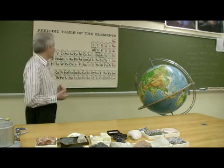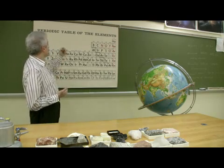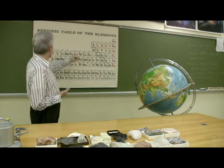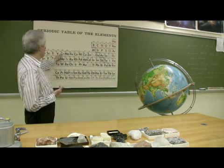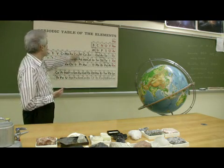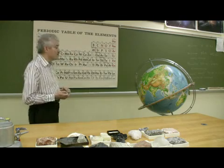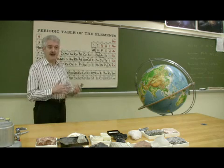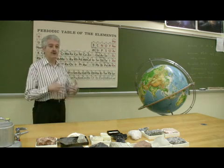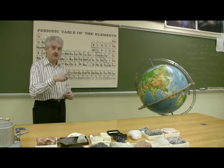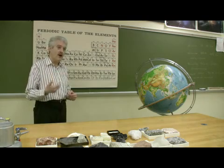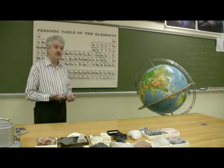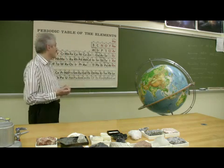A third type is called nichrome — the name comes from nickel (Ni) and chromium (Cr). It's about eighty percent nickel and about twenty percent chromium, and it's used to make heating elements. So if you have a hairdryer or a toaster and you look inside, you'll see coils of wire in there that heat up when electricity goes through them — that's nichrome.